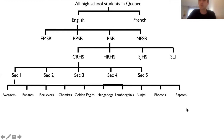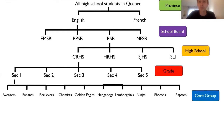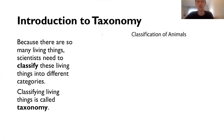So what did we do? We classified all these students. First we looked at the province, then the school board, then the high school, the grade level, and the core group. We could keep dividing if we wanted — students would be next. This is just a bit of a metaphor I want you to keep in mind, because we do something similar when we try to sort living things. And that is what taxonomy is: because there are so many different living things, we need to structure it.